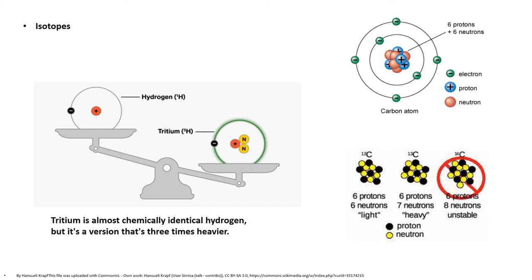All three forms of hydrogen have nearly identical chemistry and can bond with oxygen to form water, but their nuclear properties differ significantly. Deuterium and tritium can fuel thermonuclear explosions because their extra neutrons can encourage fusion of hydrogen atoms into helium atoms, which have two protons, far more easily than H1 alone.